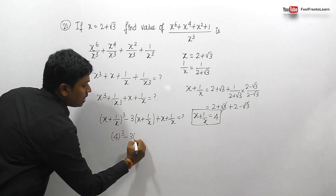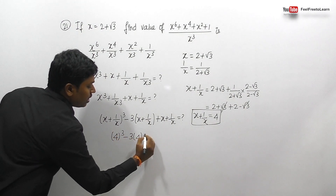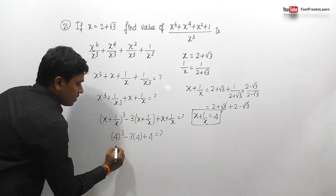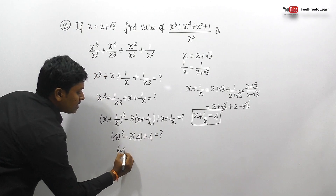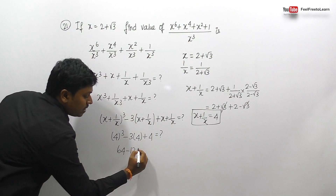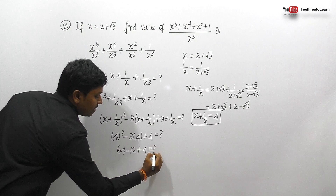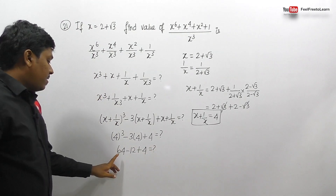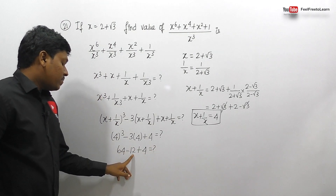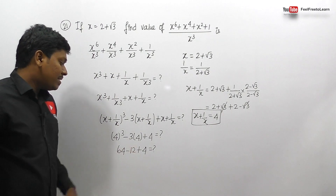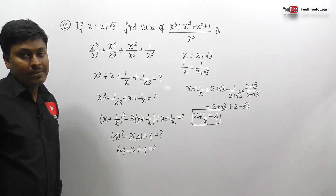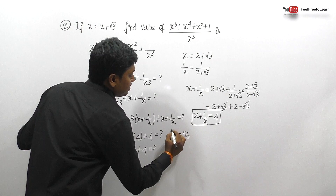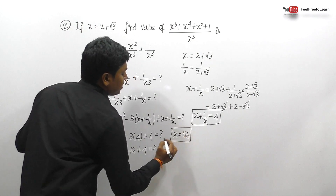With x plus 1/x equal to 4, substituting into (x+1/x)³ minus 3(x+1/x) plus (x+1/x): 4³ minus 3 times 4 plus 4 equals 64 minus 12 plus 4 equals 56. So the answer for question 21 is 56.